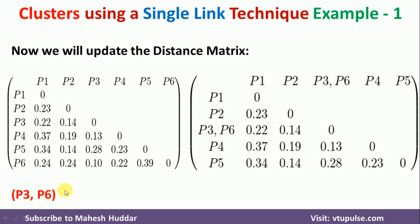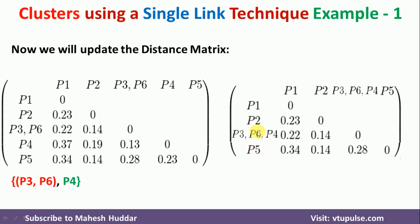This is the first cluster. Next, we continue the same process from the resulting matrix. The new minimum distance is 0.13, which is between the cluster (P3, P6) and P4. So we merge P4 into the cluster with P3 and P6, and remove the P4 row and column from the matrix.